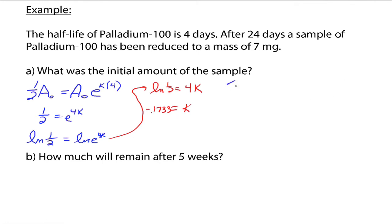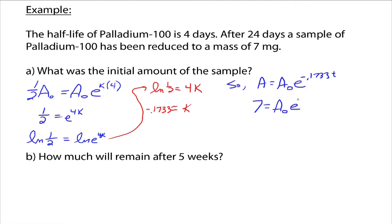So now we've got K. Therefore, our formula looks like this: A equals A naught times E to the negative 0.1733T. We know the decay constant, and it's negative because it's decaying — everything worked out as expected. Now we go back: after 24 days, a sample has been reduced to 7 milligrams. So T equals 24, and we want the amount to be 7. We're solving: 7 equals A naught times E to the negative 0.1733 times 24.